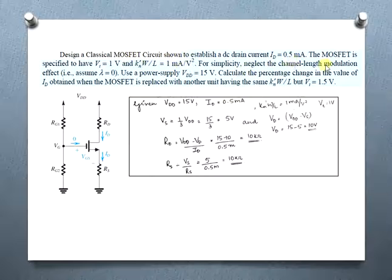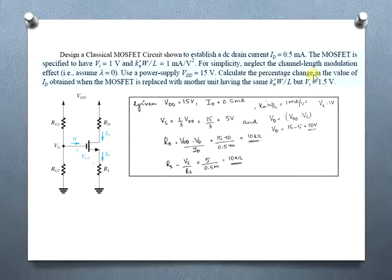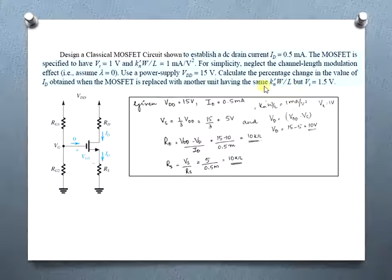For simplicity, neglect the channel length modulation effect and use a power supply VDD = 15 V. We need to compute the percentage change in the drain current if the MOSFET is replaced with another unit having the same KN' · (W/L) but a threshold voltage of 1.5 V.